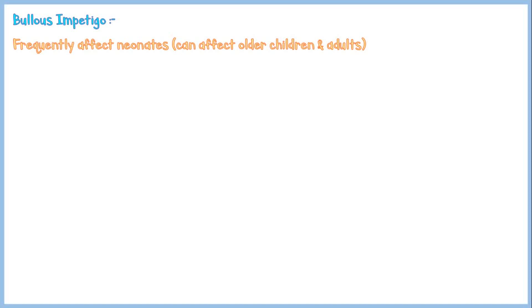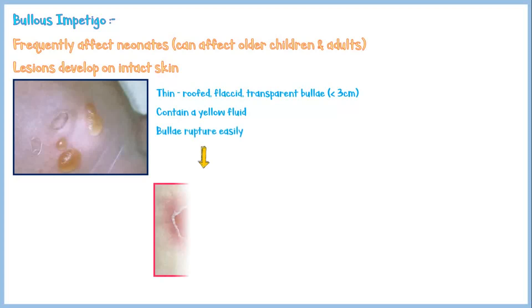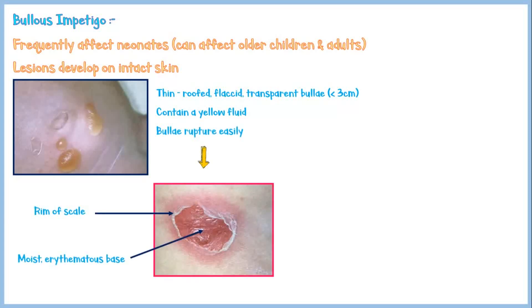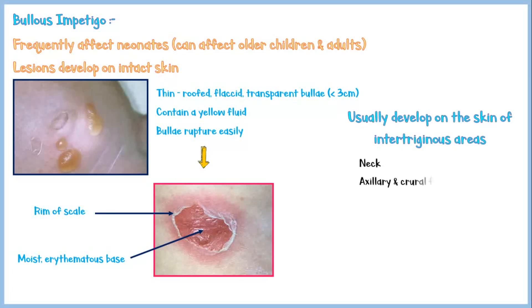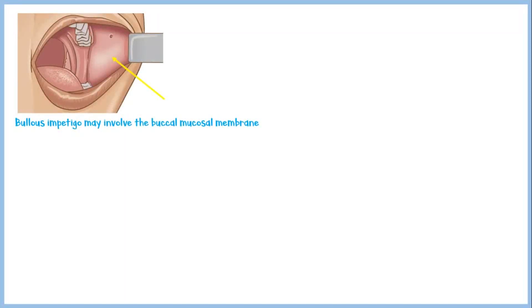Bullous impetigo frequently affects neonates, but it can affect older children and adults as well. Unlike the non-bullous type, the lesions appear on intact skin. These lesions are thin-roofed, flaccid, transparent bullae less than 3 cm in size, containing yellow-colored fluid. The bullae can easily rupture, producing a rim of scale around a moist erythematous base. Lesions usually develop on intertriginous areas such as the neck, axillary and crural folds, and diaper area. There is no surrounding edema, and regional lymphadenopathy is absent. Sometimes bullous impetigo may involve the buccal mucosal membrane, and it is considered less contagious than the non-bullous type.